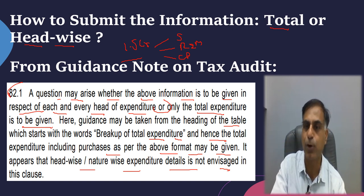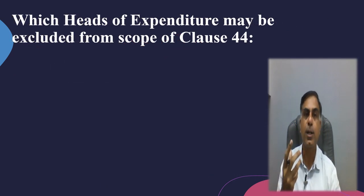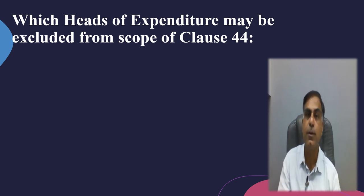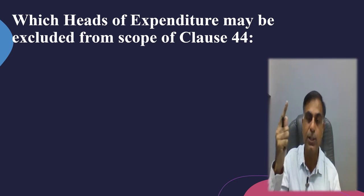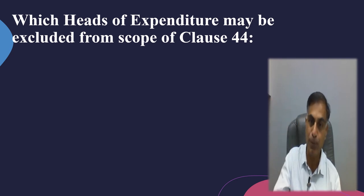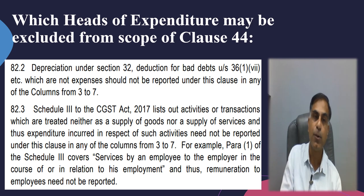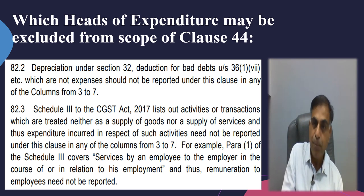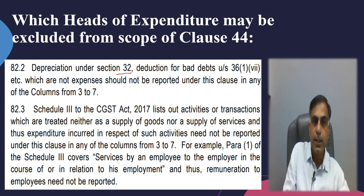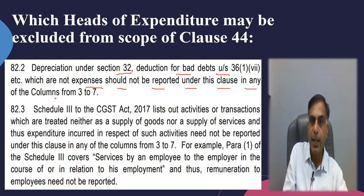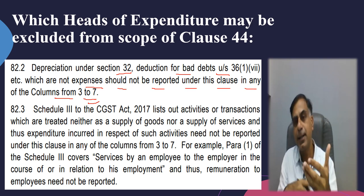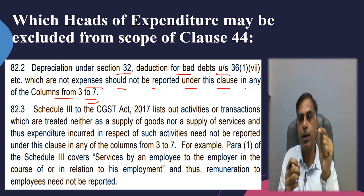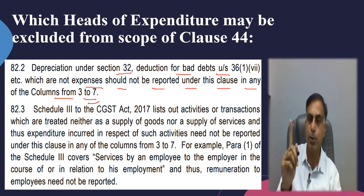I hope this is an important takeaway for all of us. Now, which heads of expenditure may be excluded from the scope of Clause 44? Here again I would take colour from the Guidance Note issued by ICAI on Tax Audit. Para 82.2 says: depreciation under Section 32, deduction for bad debts under Section 36(1)(vii), etc., which are not expenses, should not be reported under this clause in any of the columns 3 to 7. So the CA Institute has made it clear that depreciation is an allowance and bad debt is an allowance or write-off of the debtor — these particular debit amounts in the P&L need not be reported in Clause 44.